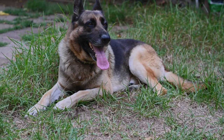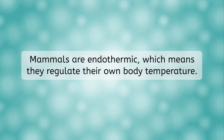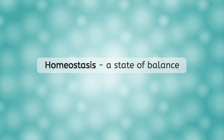Ever wonder why dogs pant? Panting and sweating is one way mammals cool themselves off when they are hot. Mammals are endothermic, meaning they regulate their own body temperature, so they need a way to cool their bodies down when they are hot and warm their bodies up when they are cold in order to achieve homeostasis. Homeostasis means a state of balance, which in this case means that they won't overheat. This ability to regulate their own body temperature is done through feedback loops and is another way mammals have adapted to be able to live in the Arctic.